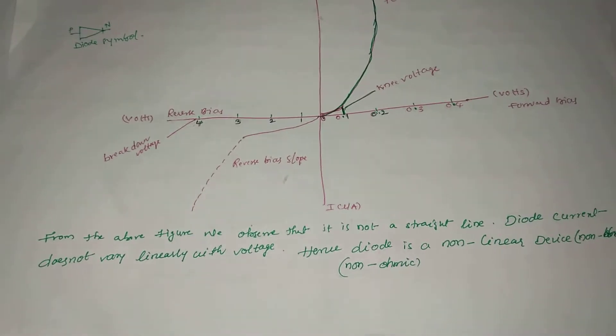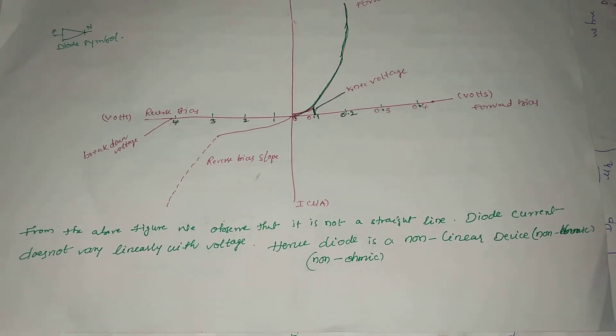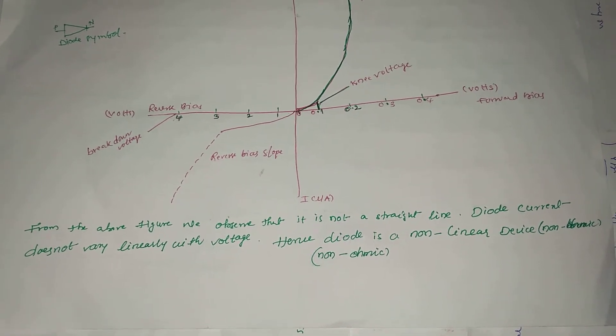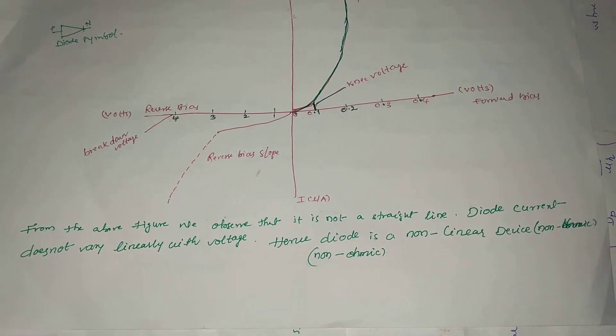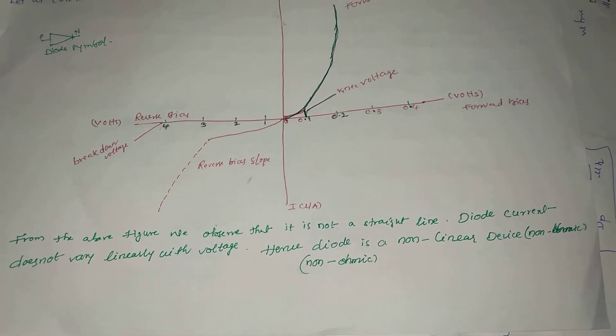From the above figure, we observe that it is not a straight line. Diode current does not vary linearly with voltage. Hence, diode is a non-linear device which means it is a non-ohmic material.